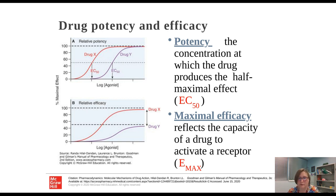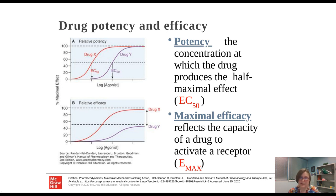I want to discuss drug potency and efficacy. Potency is the concentration at which the drug produces the half-maximal effect, or the EC50. Looking at figure A, the percent maximal effect is on the y-axis and the log of drug concentration is on the x-axis. Drug X is less shifted from drug Y, so it would be more potent — having a lower EC50 — than drug Y.